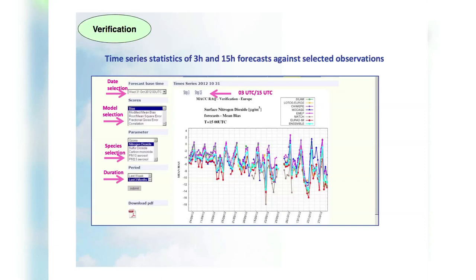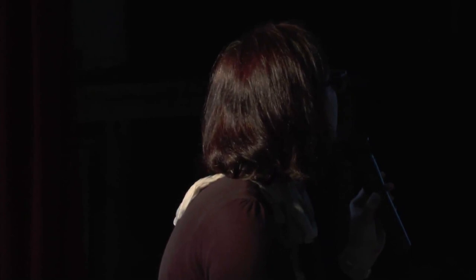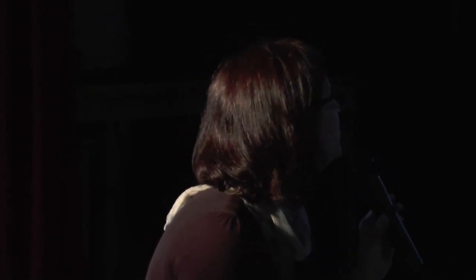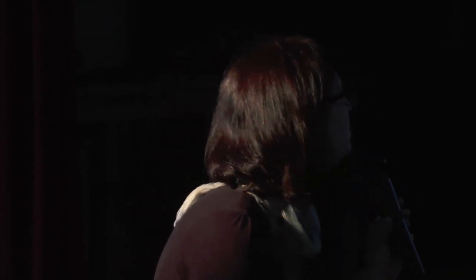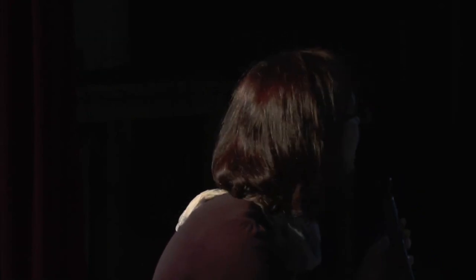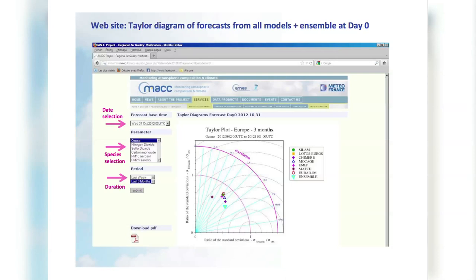There's another way to see the verification statistics — how it evolves day by day. Here the mean bias is shown by day, and you can display results at step 3 and step 15, meaning at 3 UTC and 15 UTC. The light blue is the ensemble, and you can see it performs consistently well. This is a very good way to monitor each model and to monitor how the ensemble evolves over time.